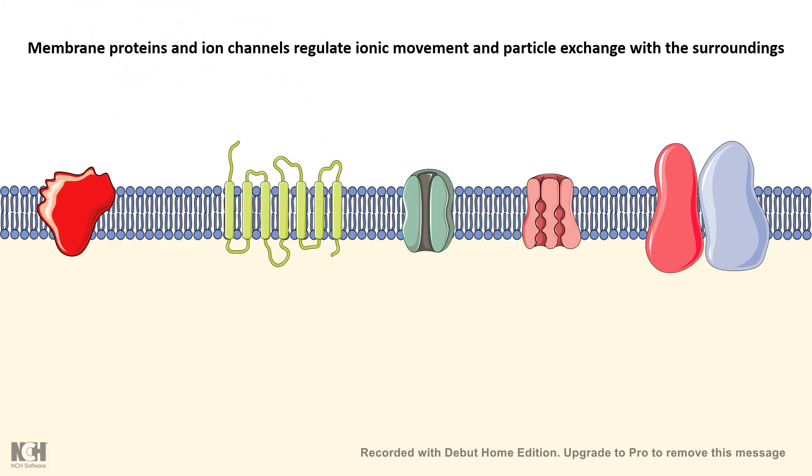Just like the factory, the cell membrane also has specific ion channels, transporters, etc., which can regulate the movement of ions and other particles across the membrane.